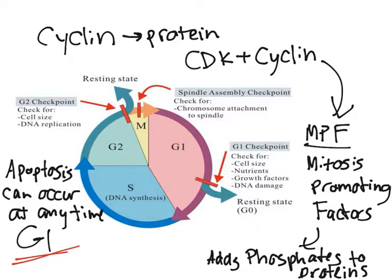There is also a G0 state. It's essentially a state where the cell is just inactive, not really doing anything. That may be because the cell has been given a signal not to divide but could divide later, or because the cell has issues and is simply waiting without progressing.